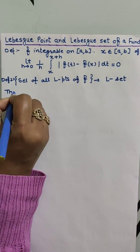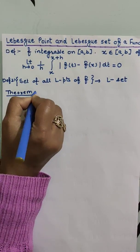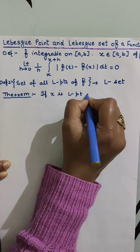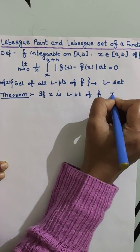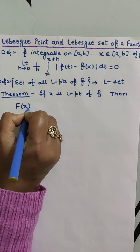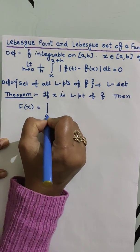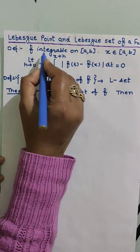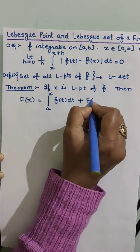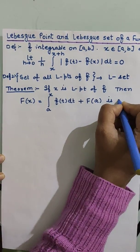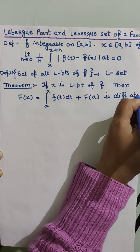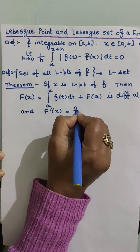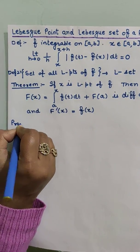On the basis of these two definitions, we will do a theorem which states that if x is a Lebesgue point of the function f, then this new function F(x), which is defined as F(x) = ∫[a to x] f(t)dt + F(a) (this integral exists because f is integrable), is differentiable at x and its derivative F'(x) = f(x). So let's start with the proof of this theorem.